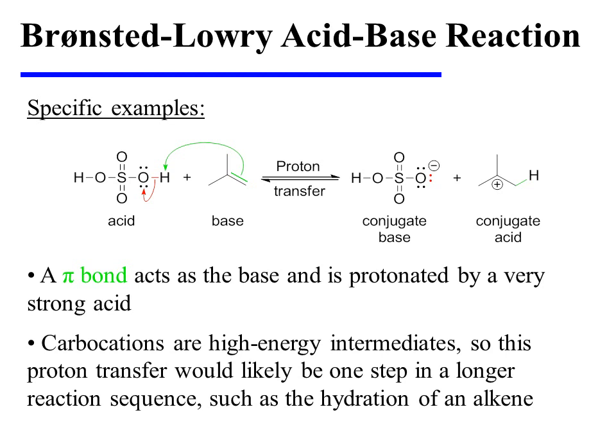In this specific example, sulfuric acid is protonating an alkene, or a species with a carbon-carbon double bond. In this instance, it's a pi bond that is serving as the basic site, and these green electrons are being used to make the new bond to the proton donated from sulfuric acid. The conjugate base is bisulfate, and the conjugate acid is a carbocation. Carbocations are relatively high-energy species, so it is unlikely that this conjugate acid is the final product. More likely, this is an intermediate in a longer reaction sequence, such as the hydration of an alkene.